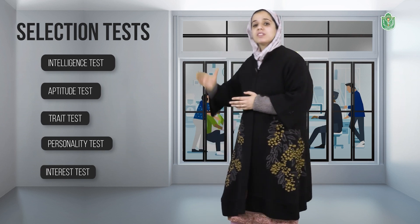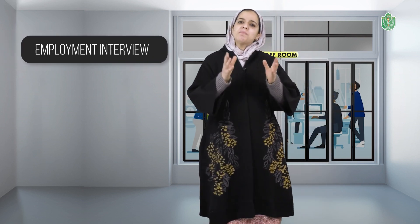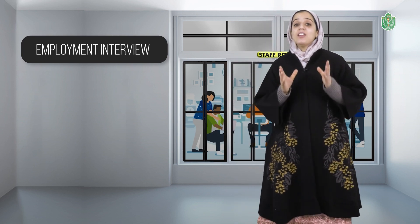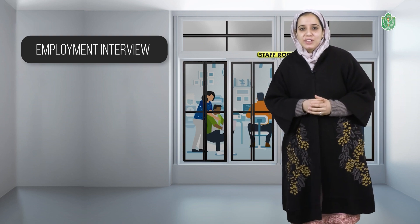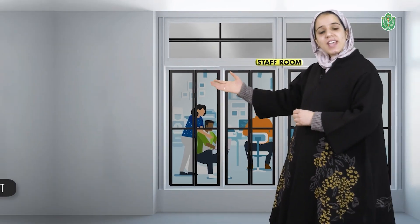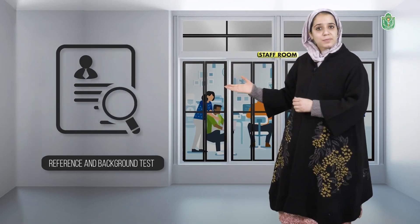The next step is the employment interview. This employment interview is done in order to get detailed information about the candidate and to know the suitability of the candidate for the job. The next is reference and background checks. In order to know more information about the candidate, one can take references from direct personal sources — for example,